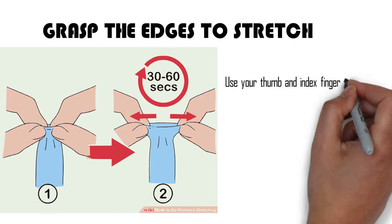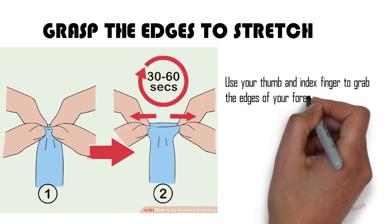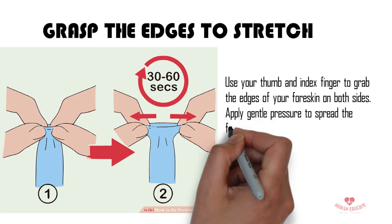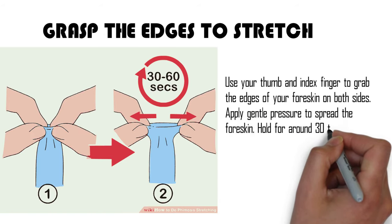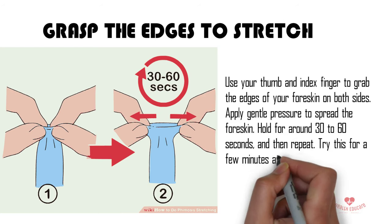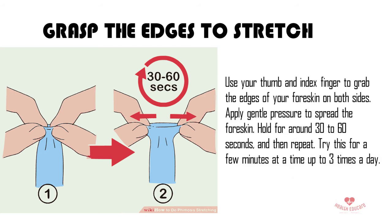Use your thumb and index finger to grab the edges of your foreskin on both sides. Apply gentle pressure to spread the foreskin. Hold for around 30 to 60 seconds, and then repeat. Try this for a few minutes at a time up to 3 times a day.